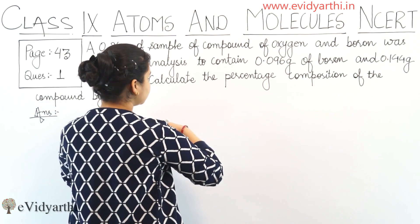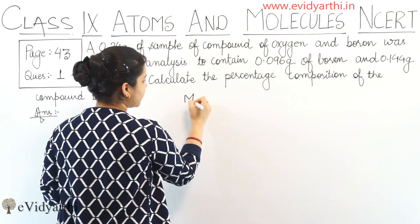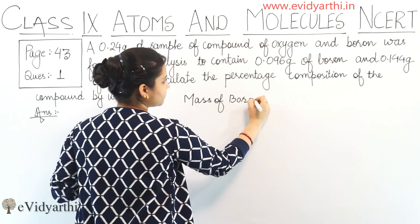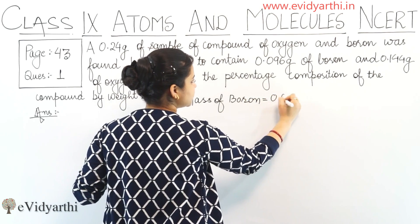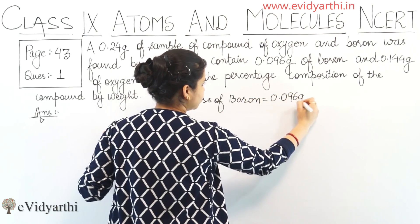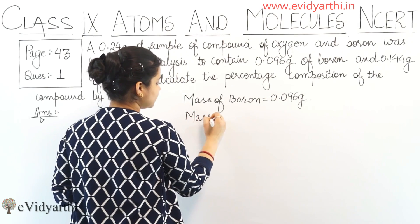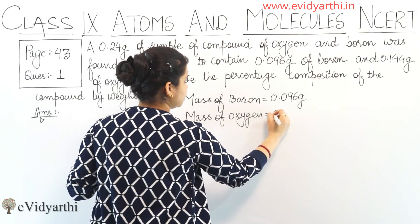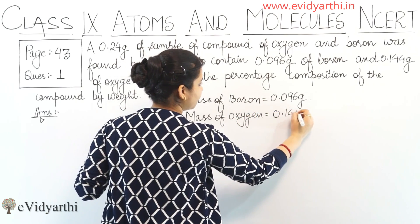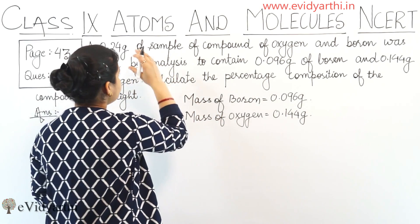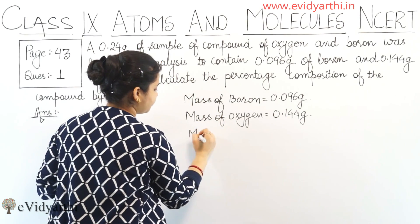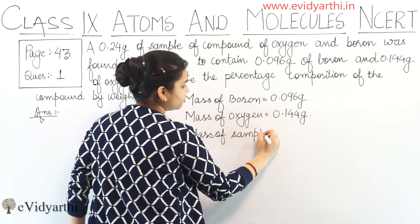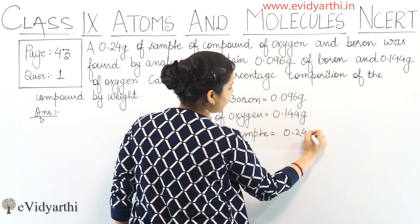So what do we have given? We are given the mass of boron, which equals 0.096 grams. Now, the mass of oxygen — it is given as 0.144 grams. And the mass of the sample is equal to 0.24 grams.